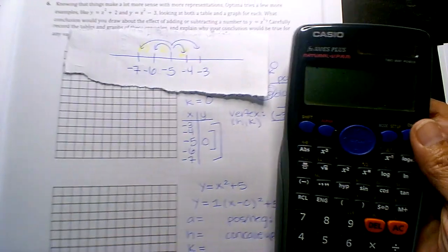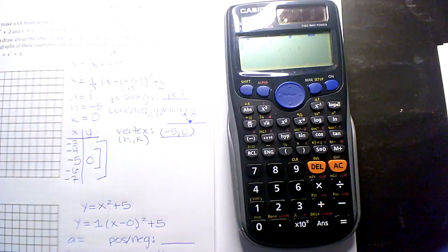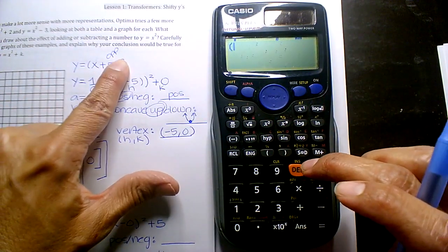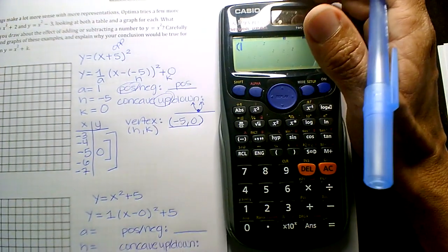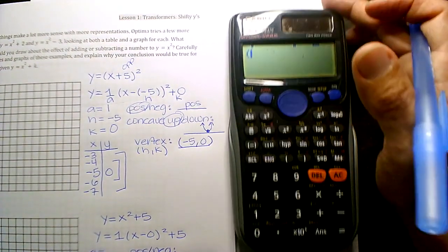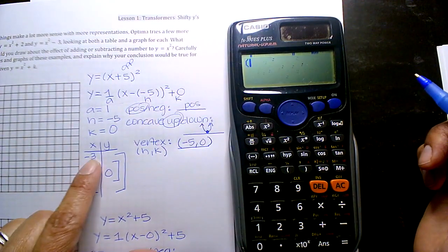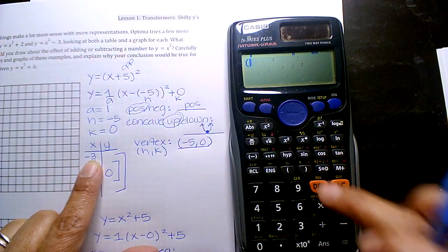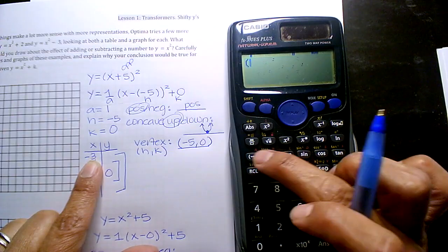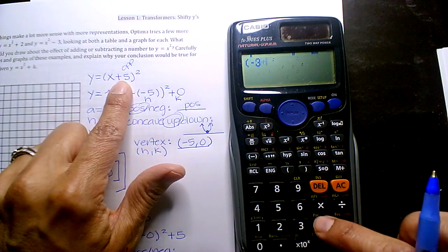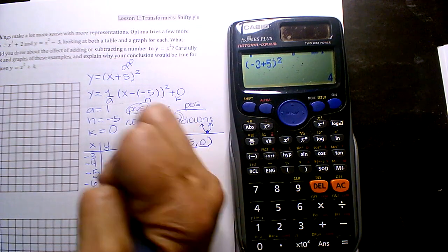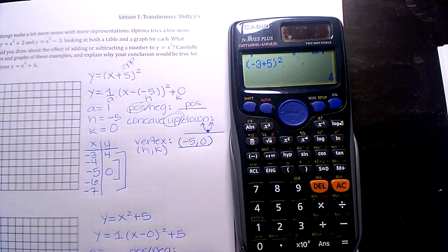Okay, and so grab a calculator. So you have x plus five squared. Do not change the positive to a negative. I do have students that will do that. So if you want to substitute a negative three, it is parenthesis negative three plus five squared, and you get four.